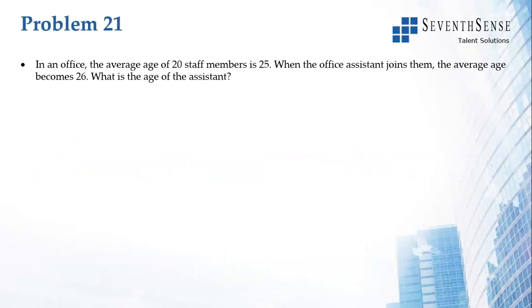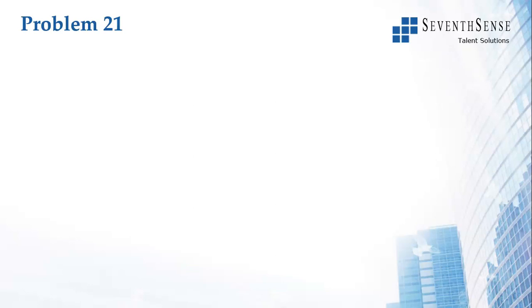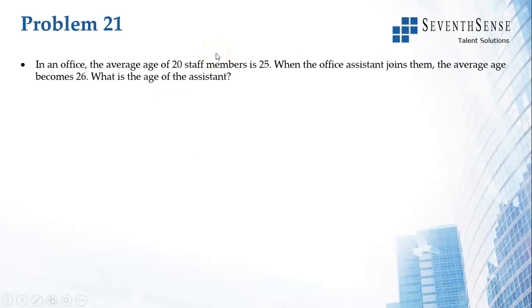Problem 21: In an office, the average age of 20 staff members is 25. So what is the total age of the staff? Total age of the staff is equal to average age times the number of staff, which is 500.